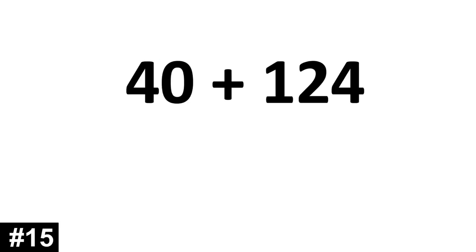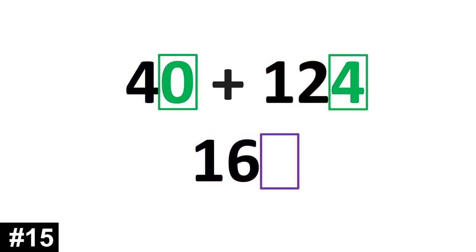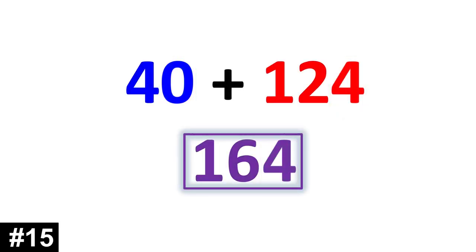40 plus 124. We have 4 tens plus 12 tens. 4 plus 12 is 16. We look to the ones. 0 and 4 is 4. 164.